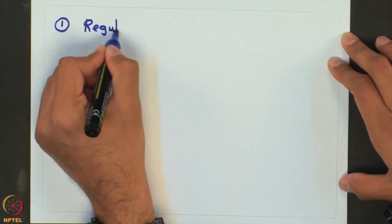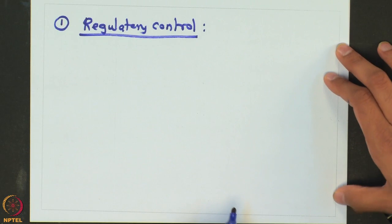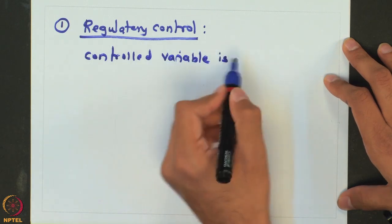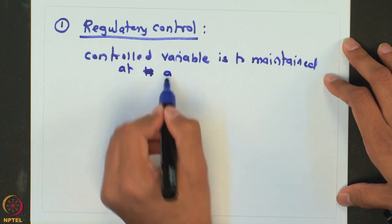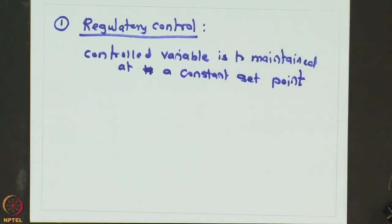We will close this lecture with the last distinction, which is what are the different types of control problems which are solved in process control. The first type of problem is known as a regulatory control problem wherein the controlled variable is to be maintained at a constant desired value or a set point and it deals with disturbance rejection.